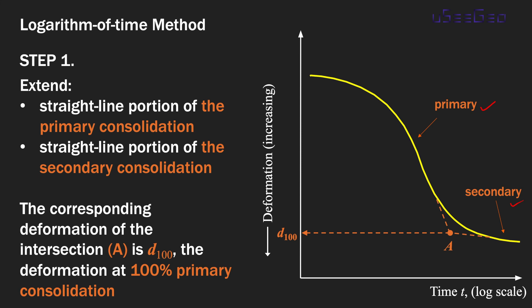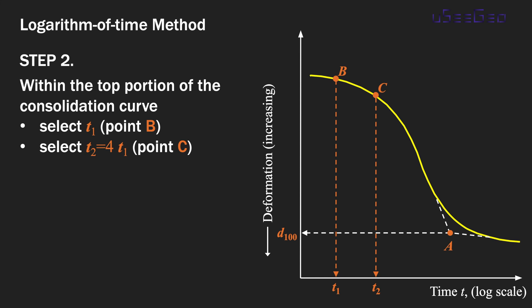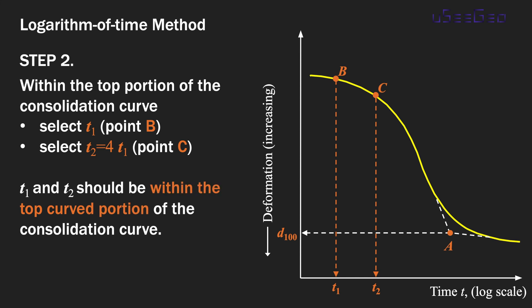In the next step, within the top curved portion of the consolidation curve, you want to pick time t1 and the corresponding point on the curve, which we call point B. Then pick time t2, which is 4 times t1, and the corresponding point, which we call point C. This may take a couple of iterations to ensure both points B and C lie within the top curved portion of the consolidation curve. That is step number two.